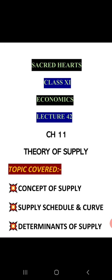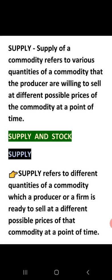In today's lecture we are going to cover three main topics: concept of supply, supply schedule and curve, and determinants of supply. The very first question is: what is the meaning of supply? Supply of a commodity refers to the various quantities of a commodity that producers are willing to sell at different possible prices of that commodity at a particular point of time.